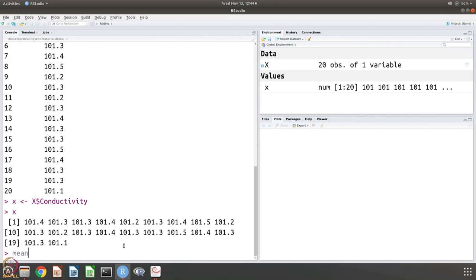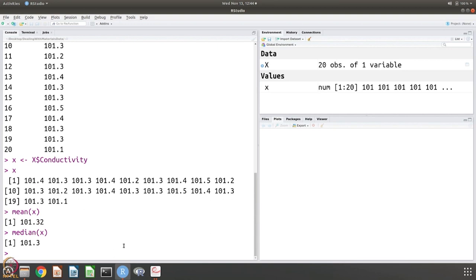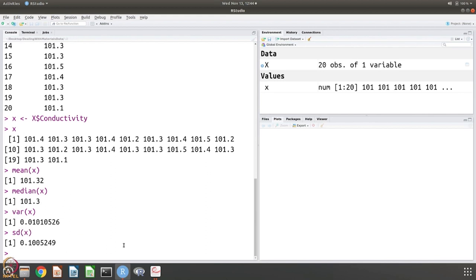Like I said, you can get the mean value of x, you can get the median of x, you can get the variance of x. Variance is also called mean square deviation and standard deviation is called root mean square deviation.